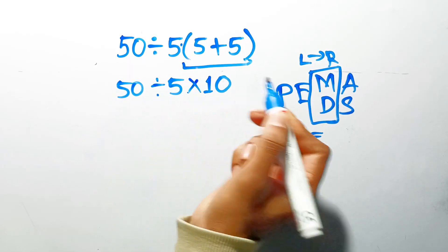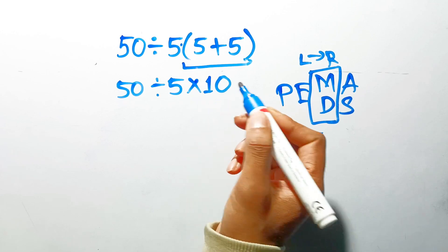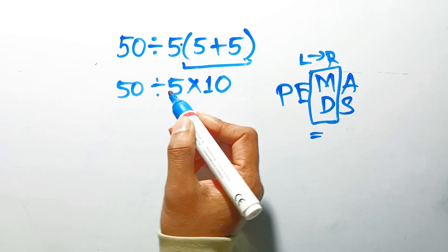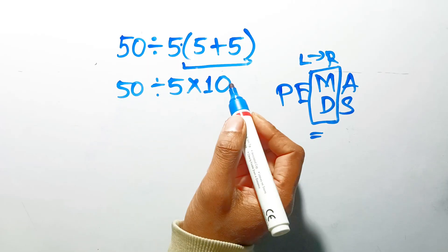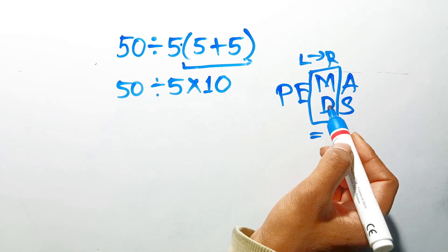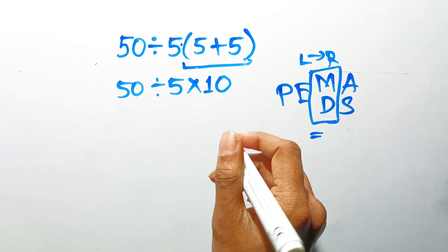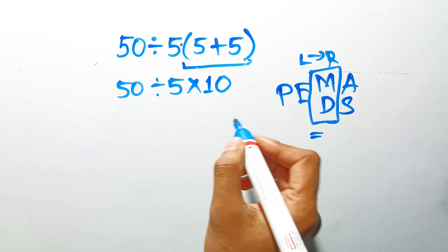Now we have one division and one multiplication. According to the PEMDAS, many people believe that multiplication has higher priority than division, because the letter M comes before the letter D in the acronym. However, this is a very common trap.